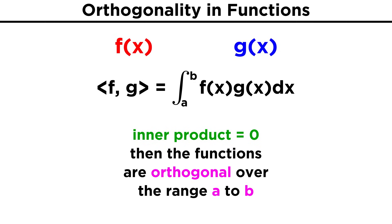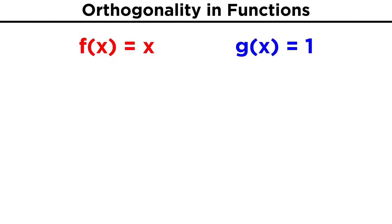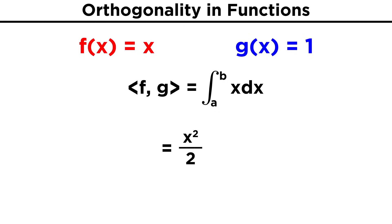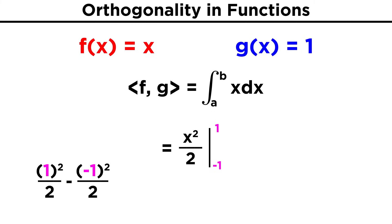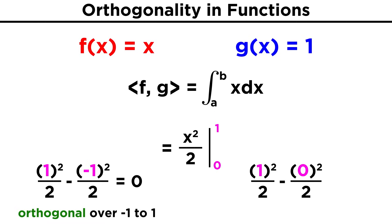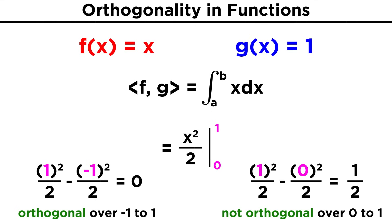However, in this case there is some dependence on what range of values we are considering. Take for example f(x) = x and g(x) = 1. Our inner product ⟨f, g⟩ equals the integral from a to b of x dx. The antiderivative is x²/2, evaluated from a to b. If our interval goes from a = -1 to b = 1, then the inner product becomes 1²/2 - (-1)²/2 = 0, so our functions are orthogonal across this range. However, if we consider the range from a = 0 to b = 1, then the inner product is 1²/2 - 0²/2 = 1/2, which is no longer zero, so our functions are not orthogonal over this range.